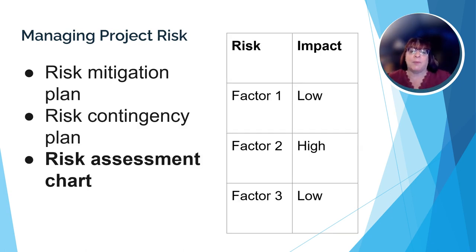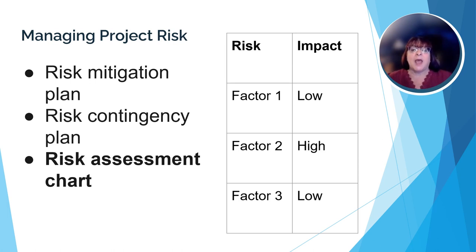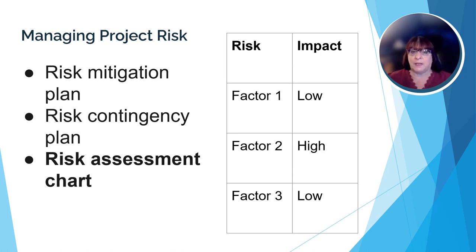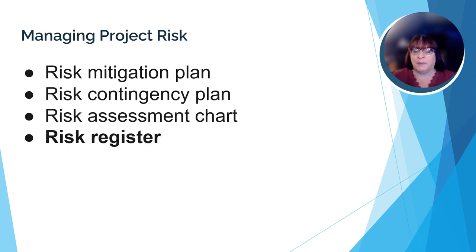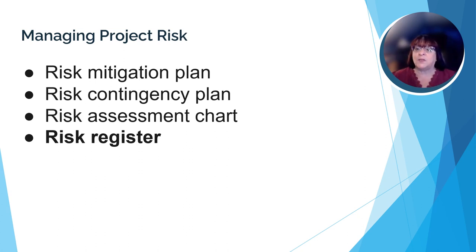The project management team will also develop a risk assessment chart. They gather the risk factors — those things that could happen to impact the scope, budget, or schedule — and determine what their likely impact will be on the project. Those risks designated as high impact will be the ones the team creates contingency plans for and puts mitigation processes in place. If there's still time or money available, they'll do the same for low impact risk factors, concentrating first on those that could lead to project failure. All of this information — mitigation plans, contingency plans, and assessment charts — is saved in a risk register, a one-stop shop for the project management team to track risks, add to the list if necessary, and understand at which point an identified risk is no longer a factor.